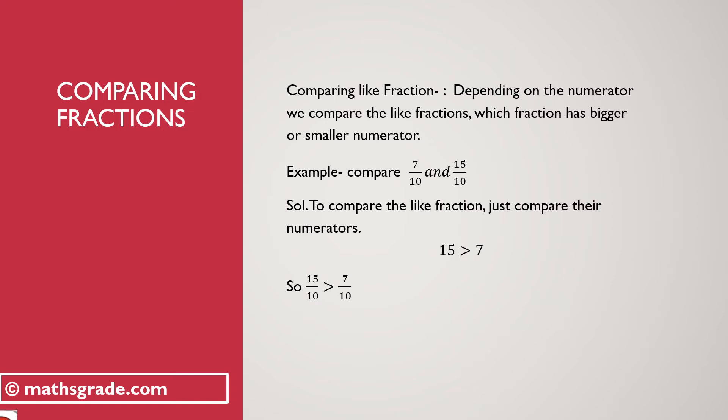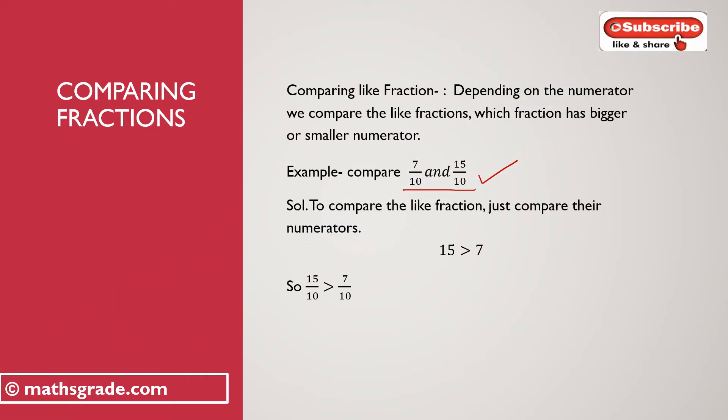For example, compare 7 divided by 10 and 15 divided by 10. These two fractions are like fractions because both have equal denominators, that is 10. In like fractions we check the numerator only. Here, numerator 7 is less than numerator 15, so 7 divided by 10 is less than 15 divided by 10.